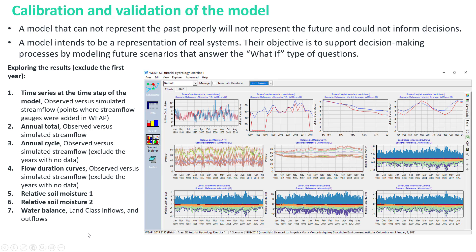Seven results should be analyzed when evaluating the model performance during the calibration and validation stage. Time series of observed versus simulated stream flow. These results are analyzed where the stream flow gauge points were added in WEAP. Annual total stream flow and annual cycle.